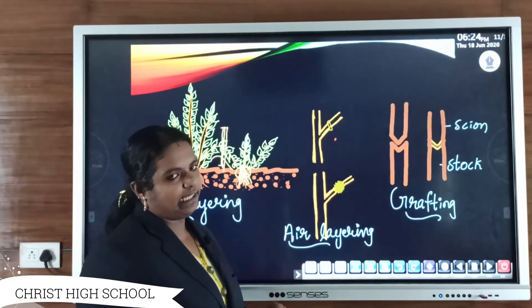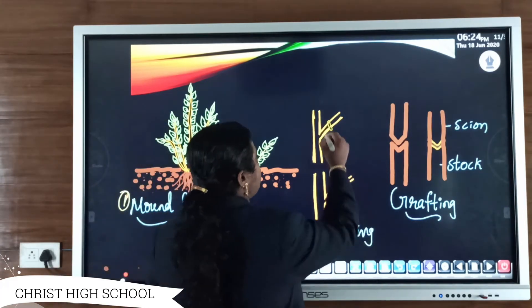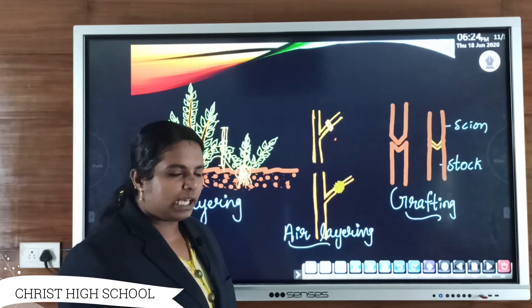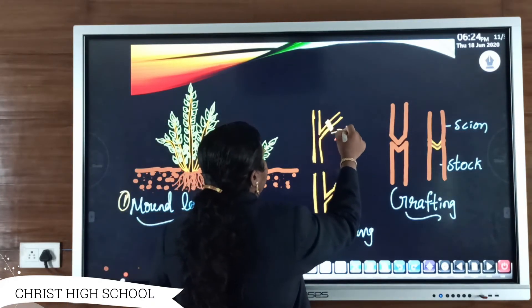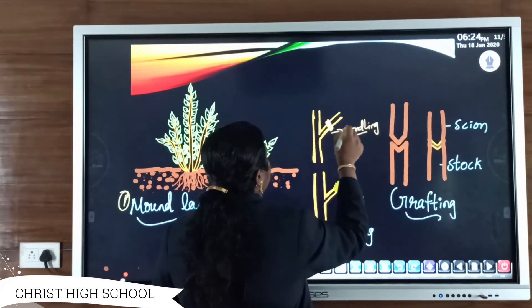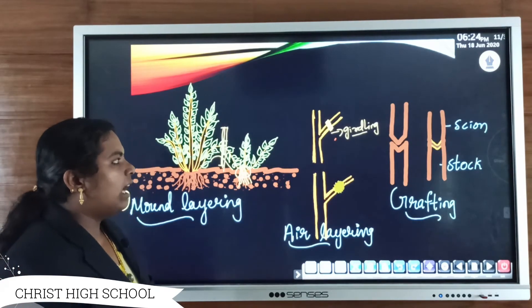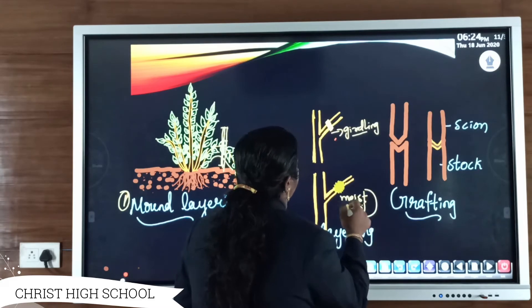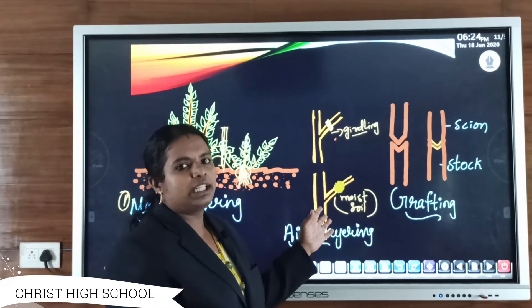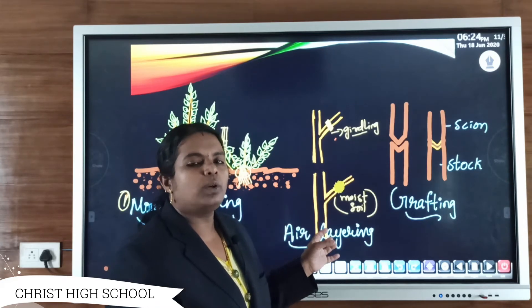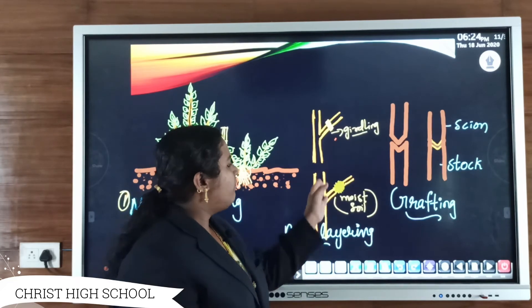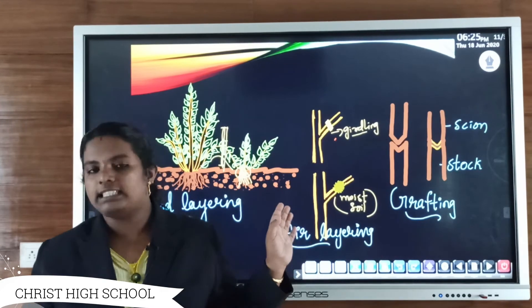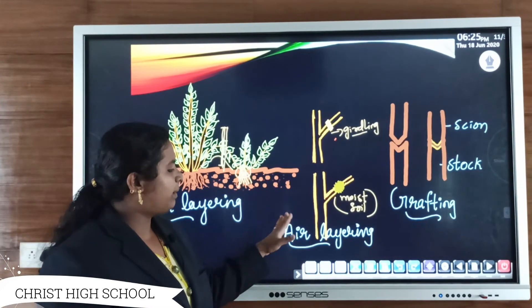In air layering, a cut — known as girdling — is made on the bark of the plant, and that portion is covered with moist soil. Within a few days, a small root system develops from that covered portion. We can then detach that part from the parental plant, plant it in soil, and it will grow into a new plant having the same characteristic features as the parental plant.